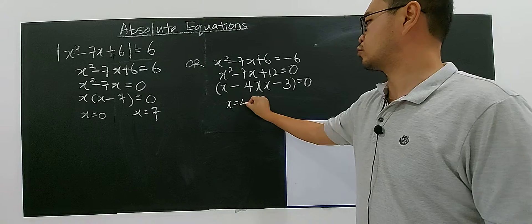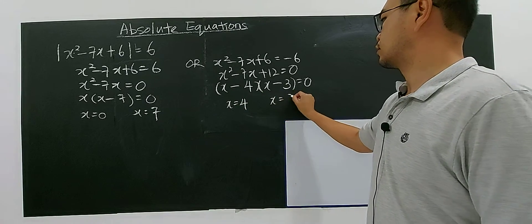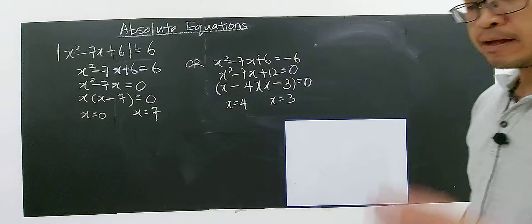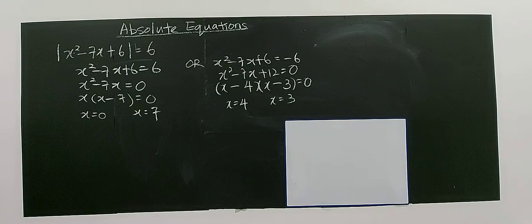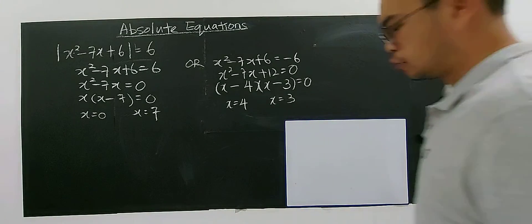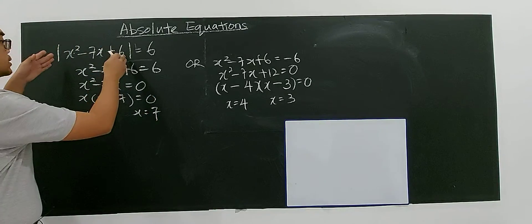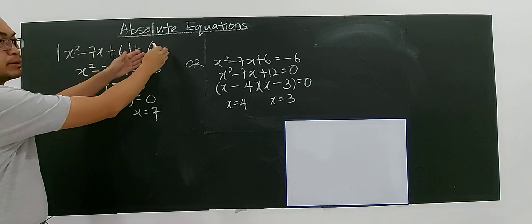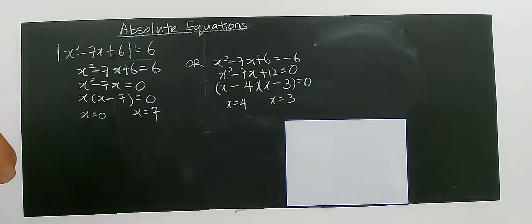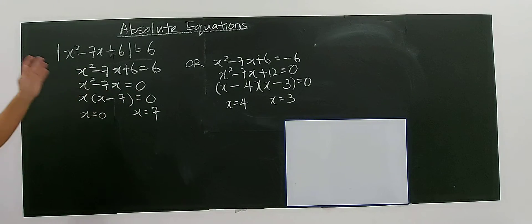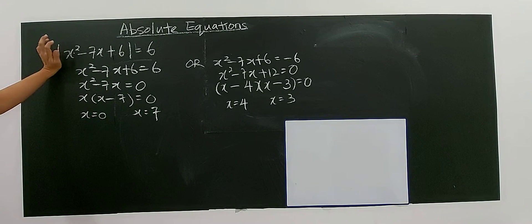So you have two solutions also from this side. Total you have four solutions. Usually this four solution would satisfy the equation because the modulus has an unknown, but this is a number. Usually this is our case. It should surely satisfy the equation. Never mind, we'll just check.